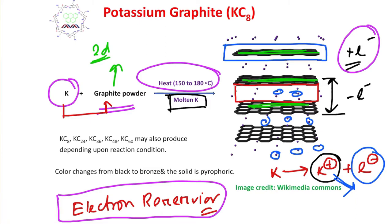Graphite doesn't need electrons but has excess electrons, so what could be its property? We'll learn now.